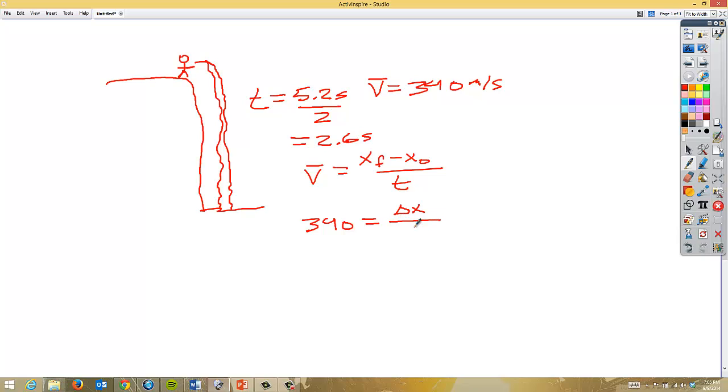and we're going to divide that by our time, which is 2.6 seconds. In order to get the 2.6 on the other side, I multiply both sides by 2.6, and when I'm done, I find out that my change in position, or the depth of the canyon, is 884 meters.